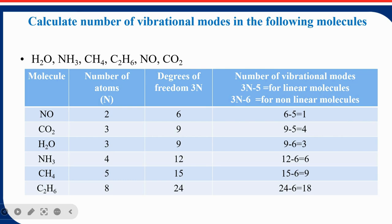For water: it has SP3 hybridization and a bent shape, making it a non-linear molecule. Degree of freedom = 9, and vibrational modes = 9 − 6 = 3. For methane (CH4): 5 atoms, degree of freedom = 15, tetrahedral (non-linear), so vibrational modes = 15 − 6 = 9. For ethane (C2H6): SP3, tetrahedral, degree of freedom = 24, and total number of vibrations = 18.